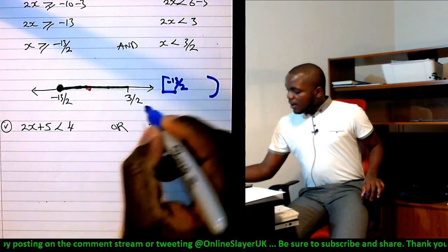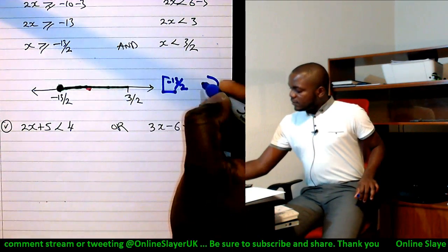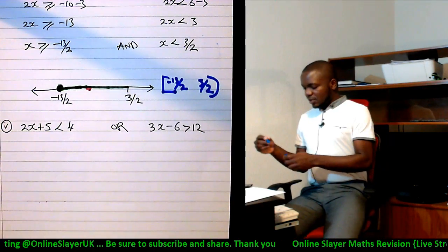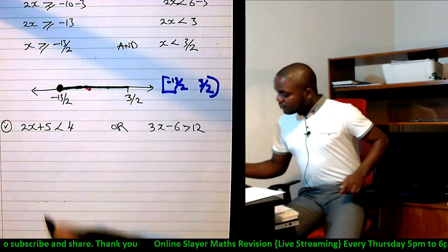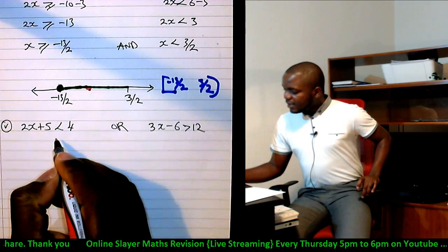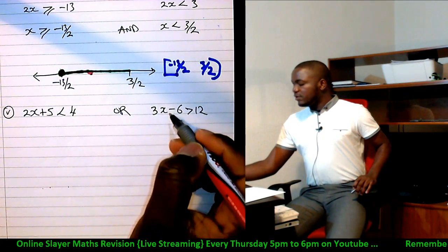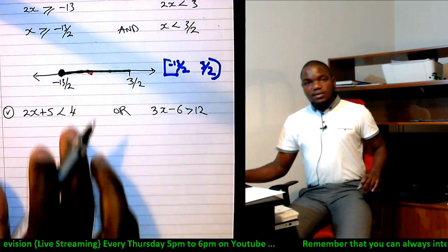And this is not included, so it's a round bracket. The square bracket was for minus 13 over 2, and the round bracket was for 3 over 2. So interesting. Okay, sorry about that digression. I just had to say. Now, 2x plus 5 less than 4, or 3x minus 6 greater than 12. Let's find the solution for x.